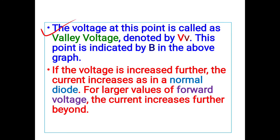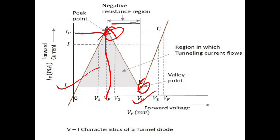If the voltage increases further beyond the valley voltage, the current increases again as in a normal diode — the current sharply increases for larger values of forward voltage. Due to this excellent property of the tunnel diode, there are various applications — for example, for generating sinusoidal waves, tunnel diodes are used as a tunnel diode oscillator.